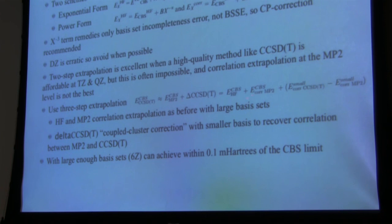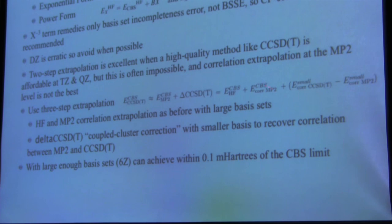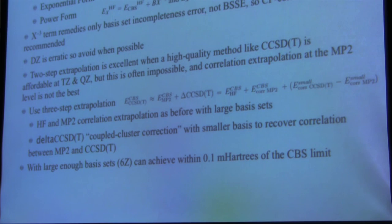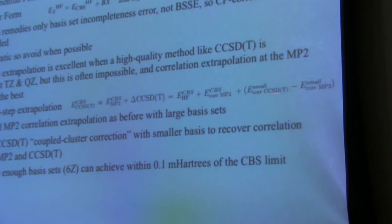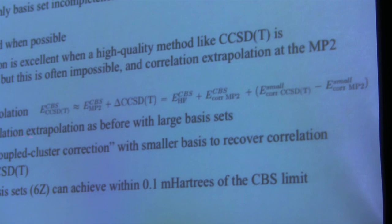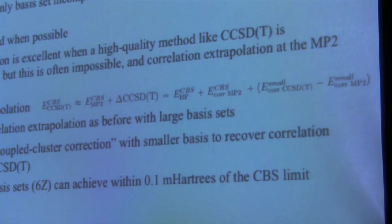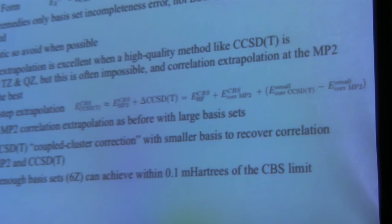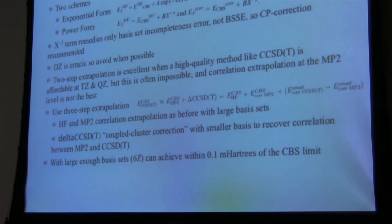What we often do in this group is a Hartree-Fock CBS extrapolation, a CBS extrapolation of MP2, and then add a delta CCSD(T) correction — the difference between CCSD(T) and MP2 correlation energies evaluated at a smaller basis set. Hartree-Fock and MP2 use the larger basis set, and the smaller basis set recovers the coupled cluster correlation. These CBS-limit approaches are quite effective.